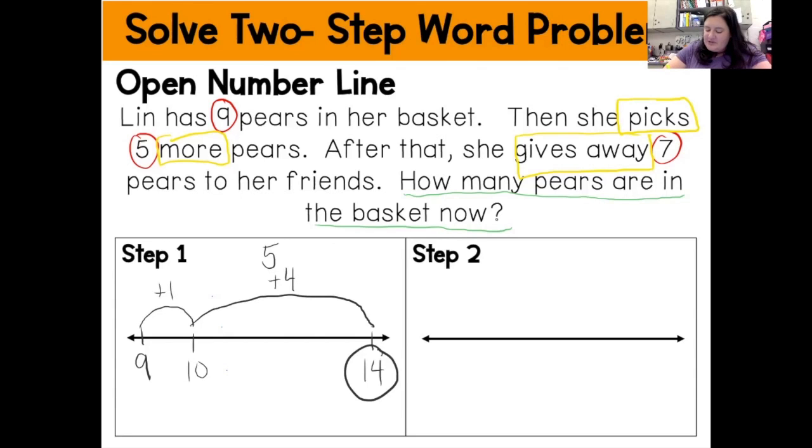Then for step two, I'm going to start at 14. And then I know that she gave away seven of those pears. So I'm going to jump till I get to the nearest 10, which would be 10. So I'm going to take away four. And then I need to take away three more. And I would land at seven because I know 10 minus three equals seven, which means that Lin has seven pears left in her basket.